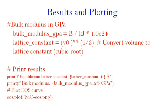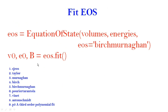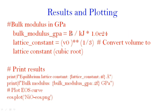Next we calculate the bulk modulus and lattice constant. The bulk modulus is already fetched in the line where we call eos.fit(), which returns volume, energy, and bulk modulus. The bulk modulus is then converted into gigapascal, and the lattice constant is obtained as the cube root of the minimum volume where we get the lowest energy. After that we print all this information and plot using eos.plot(), saving in PNG format.